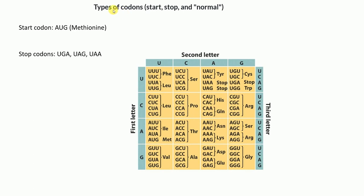There are different types of codons: start codons, stop codons, and normal codons. The start codon is AUG, which codes for methionine. There are three stop codons: UGA, UAG, and UAA. Normal codons code for amino acids — for example, GCU, GCC, GCA, and GCG all code for amino acids.